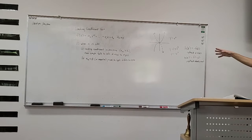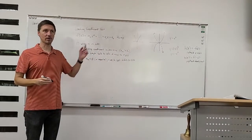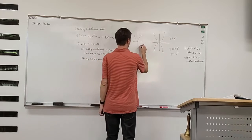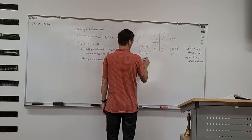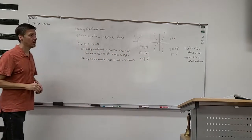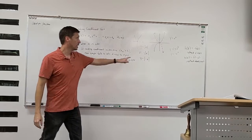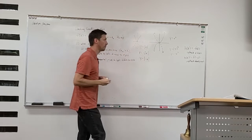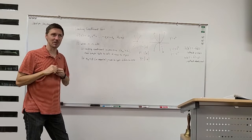For x cubed specifically it doesn't matter, but if I gave you a different function on the test, it might. For example, y equals the absolute value of x — y equals negative absolute value of x is very different from y equals the absolute value of negative x. With the negative in front, it flips around the x-axis. When you flip the absolute value about the y-axis, it looks exactly the same.